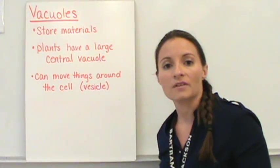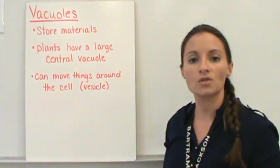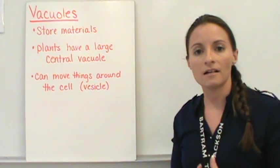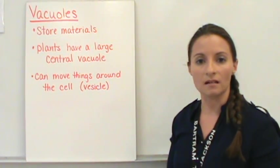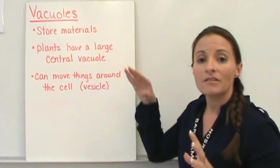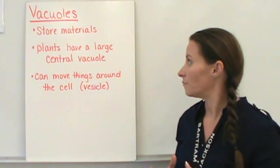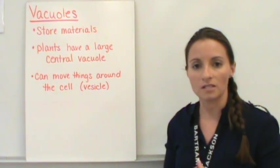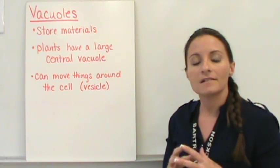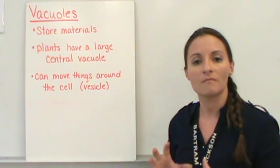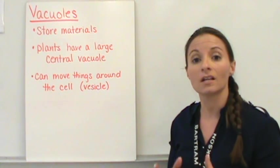First, let's start with vacuoles. Vacuoles help to store material. They're kind of like the storage tanks within a cell. Plants have a very large central vacuole, and this is to help them store a lot of water.